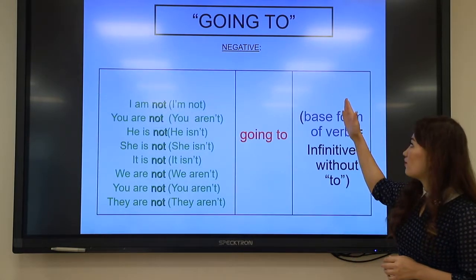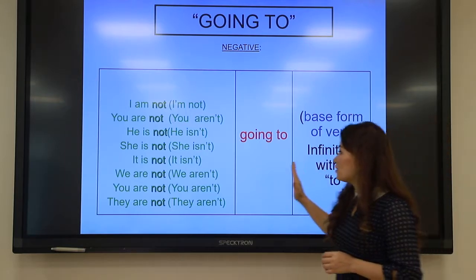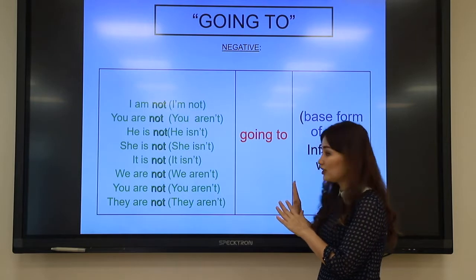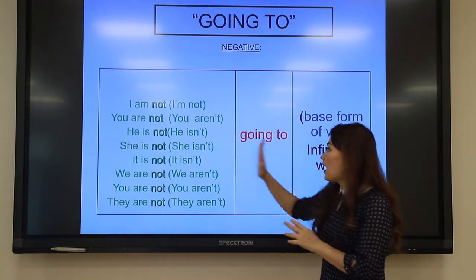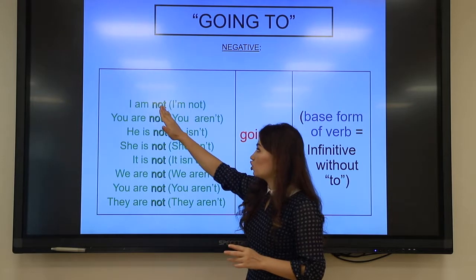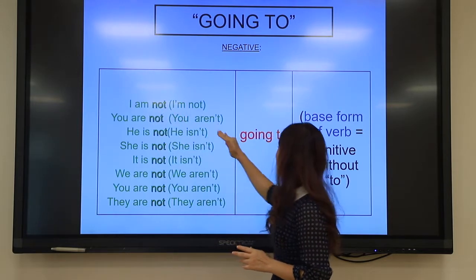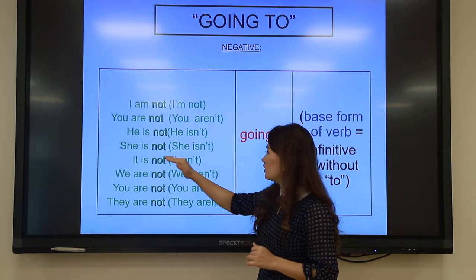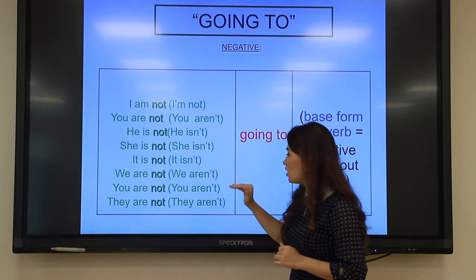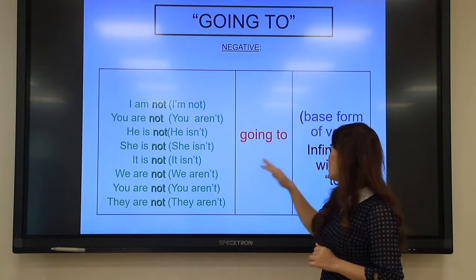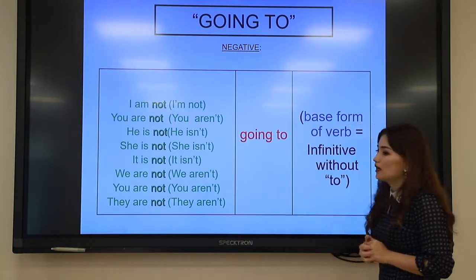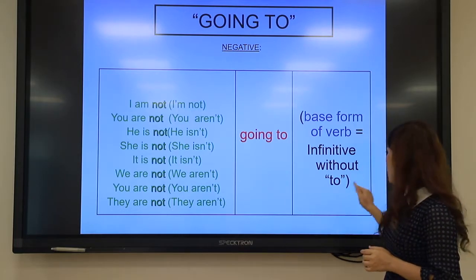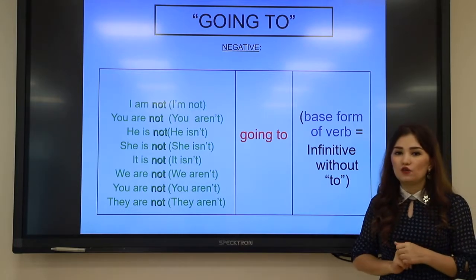The negative form is: I am not going to, you are not, he is not, she is not, it is not, we are not, you are not, they are not — going to + base form of the verb. Note: use the base form without 'to' infinitive.